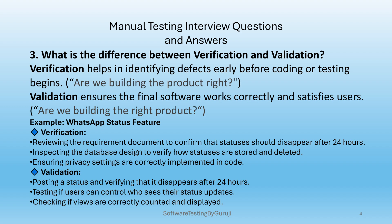Using the example of a WhatsApp status feature: in verification, we review requirements documents to confirm statuses should disappear after 24 hours, inspect the database design to verify how statuses are stored and deleted, and ensure privacy settings are correctly implemented in code. In validation, we post a status and verify it disappears after 24 hours, test if users can control who sees their status updates, and check if views are correctly counted and displayed.